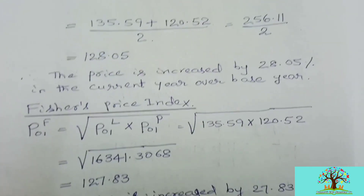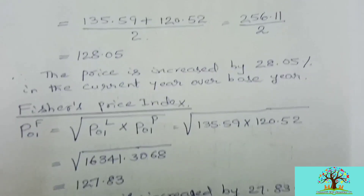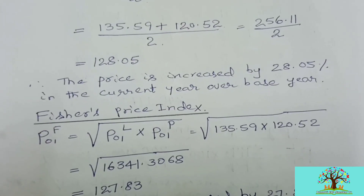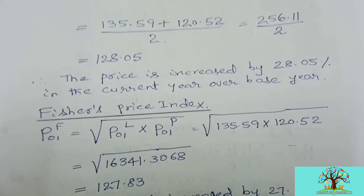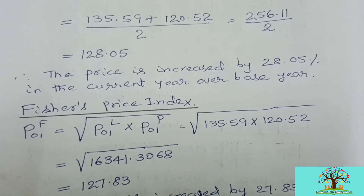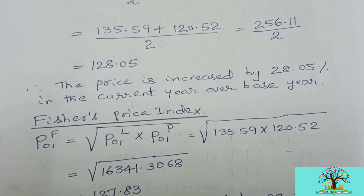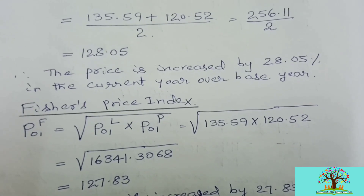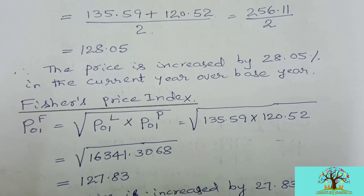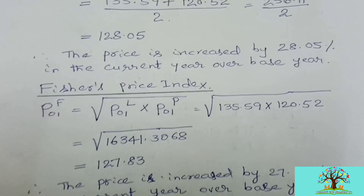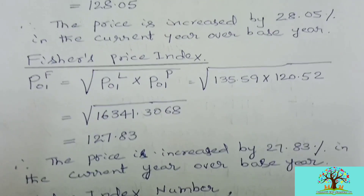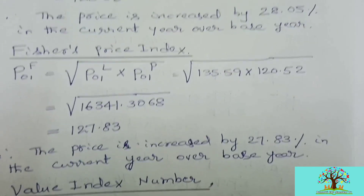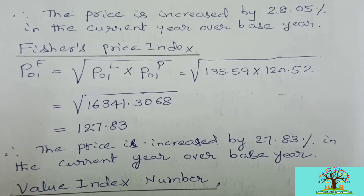Fisher's price index number: once you calculate Laspeyre's and Paasche's, you can easily calculate Fisher's. P01(F) equals the square root of P01(L) multiplied by P01(P). That equals the square root of 135.59 multiplied by 120.52, which equals the square root of 16341.3068, giving 127.83. Subtracting 100 gives 27.83 percent. Therefore the price increased by 27.83 percent in the current year over the base year.